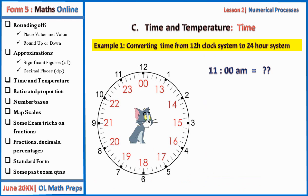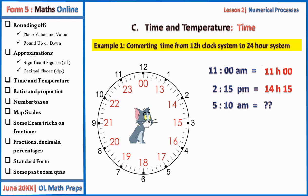Let's take examples converting from the 12-hour to the 24-hour clock system. 11 am corresponds to 11:00 — the first 11 hours are the same. 2:15 pm is in the second half of the day, so add to 12 hours: 12 plus 2 gives 14:15. 5:10 am is during the first 12 hours, so just maintain it as 05:10. 10:45 pm — add to 12 hours — gives 22:45.